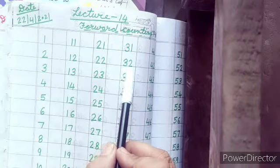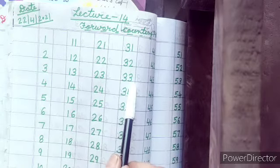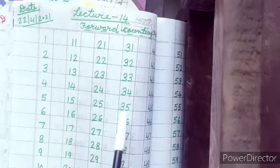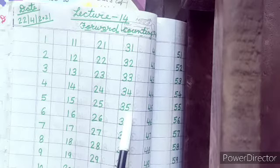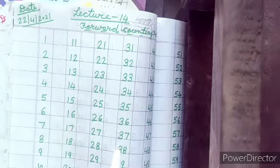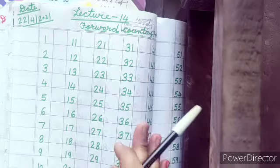Then after what will come? 32. Very good. 33, 34, 35, 36, 37, 38, 39, 40.